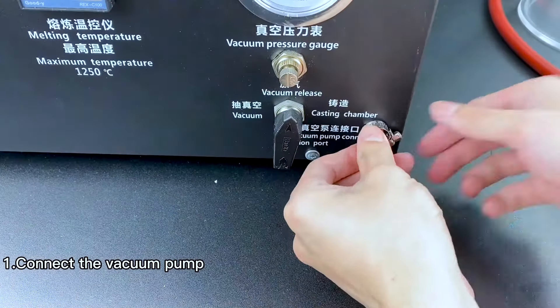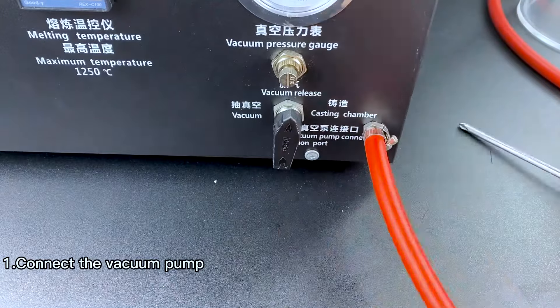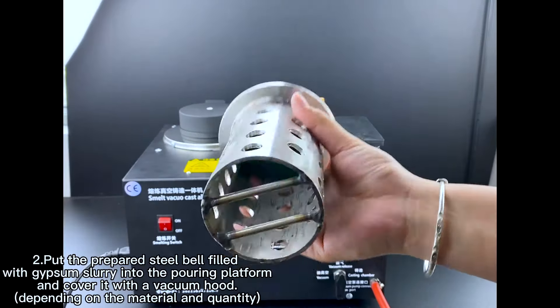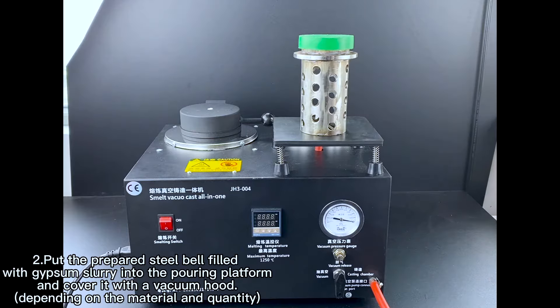To vacuum: 1. Connect the vacuum pump. 2. Put the prepared steel barrel with gypsum slurry into the pouring platform and cover it with a vacuum hood.